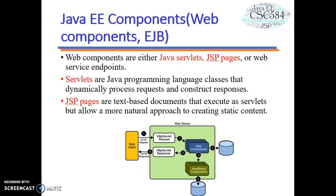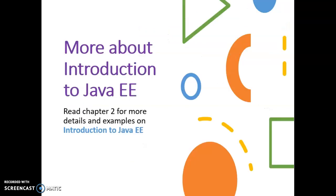Let's look at Java EE components. Web components in Java EE are Java servlets, JSP pages, or web service endpoints. Servlets are Java programming language classes that dynamically process requests and construct responses. JSPs are text-based components embedded with HTML that execute as servlets but allow a more natural approach to creating static content. Both can be used as web components, and we also have JavaBeans components that interact directly with the database. Please read Chapter 2 for details and more examples. Thank you.